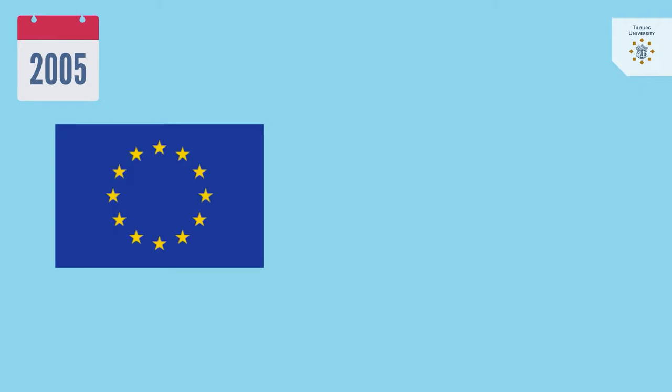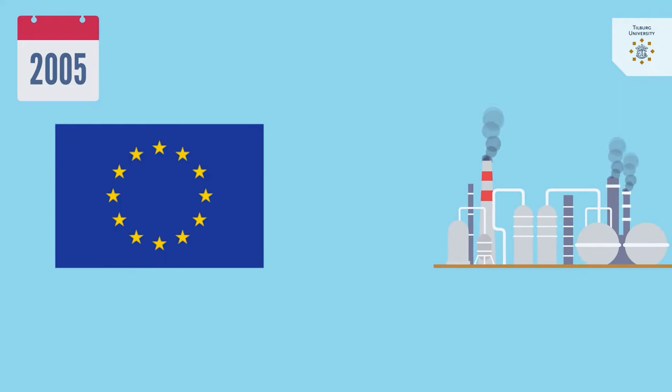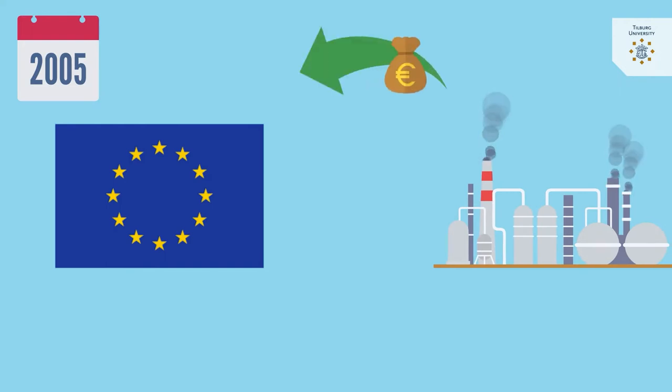In 2005, the European Union set up an emissions trading system. From that year onwards, big energy-intensive firms in the EU buy, trade and save emissions allowances that permit them to emit CO2, the major greenhouse gas.